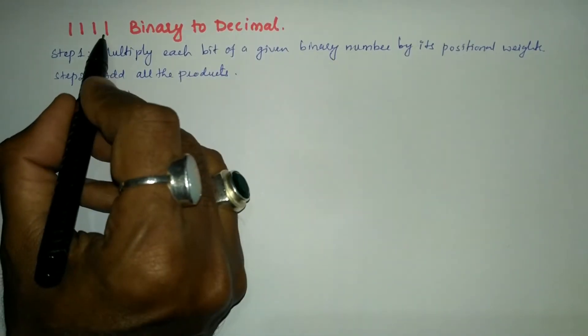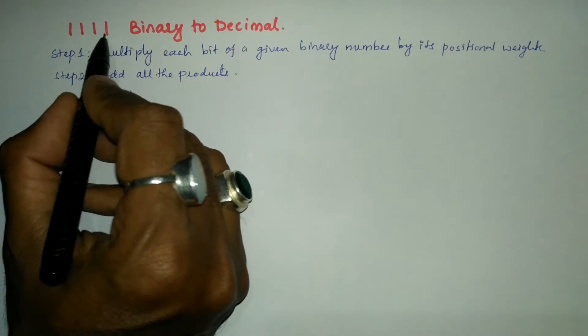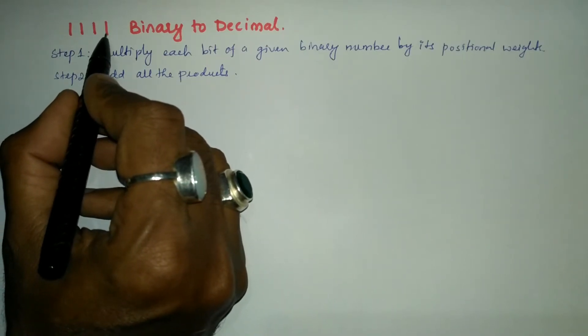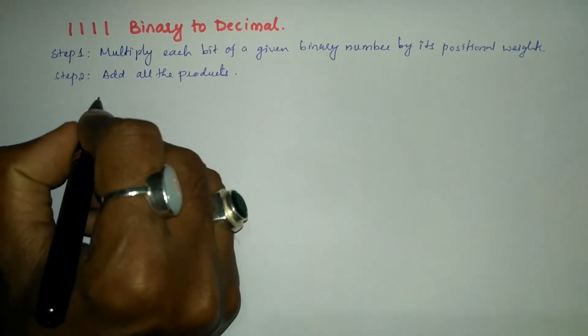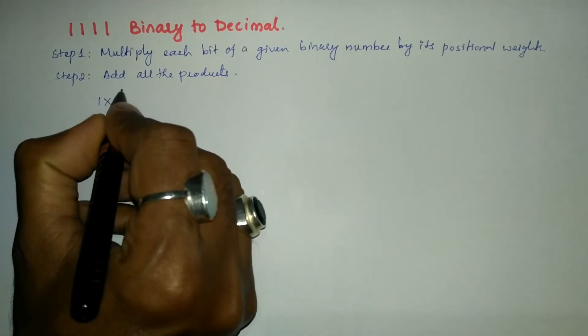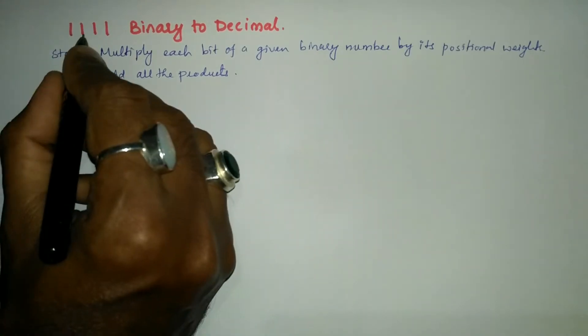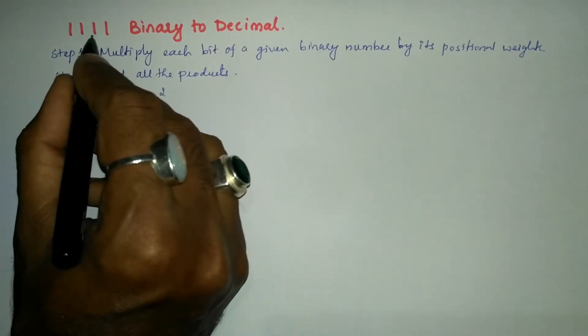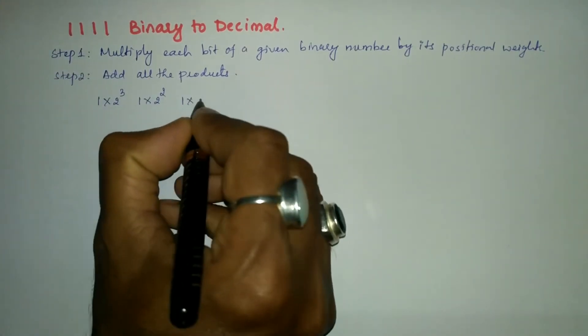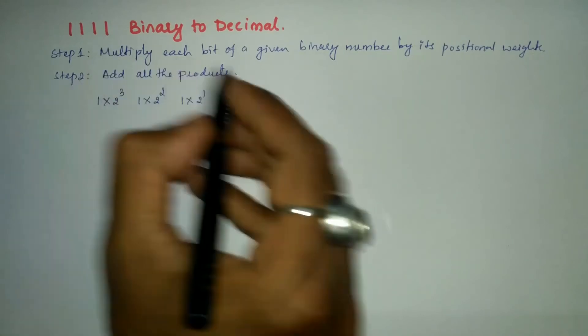Now let us count the digits from the right hand side. So here position of this bit number one is zero, one, two, three. So here I am going to write 1 × 2³ + 1 × 2² + 1 × 2¹ + 1 × 2⁰.